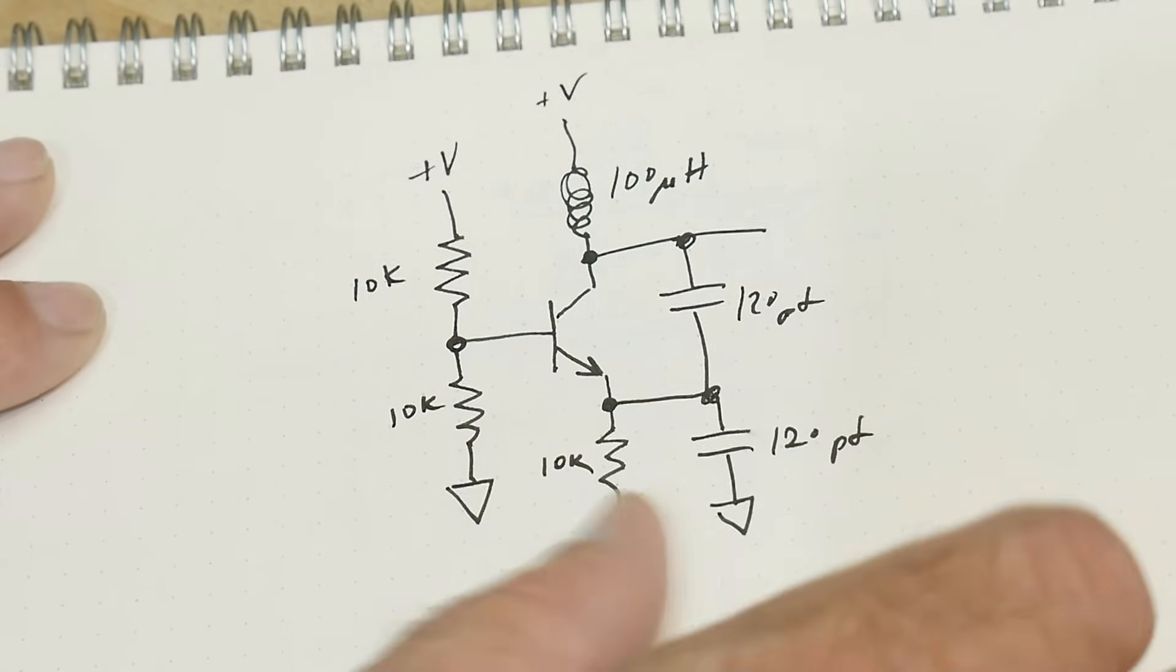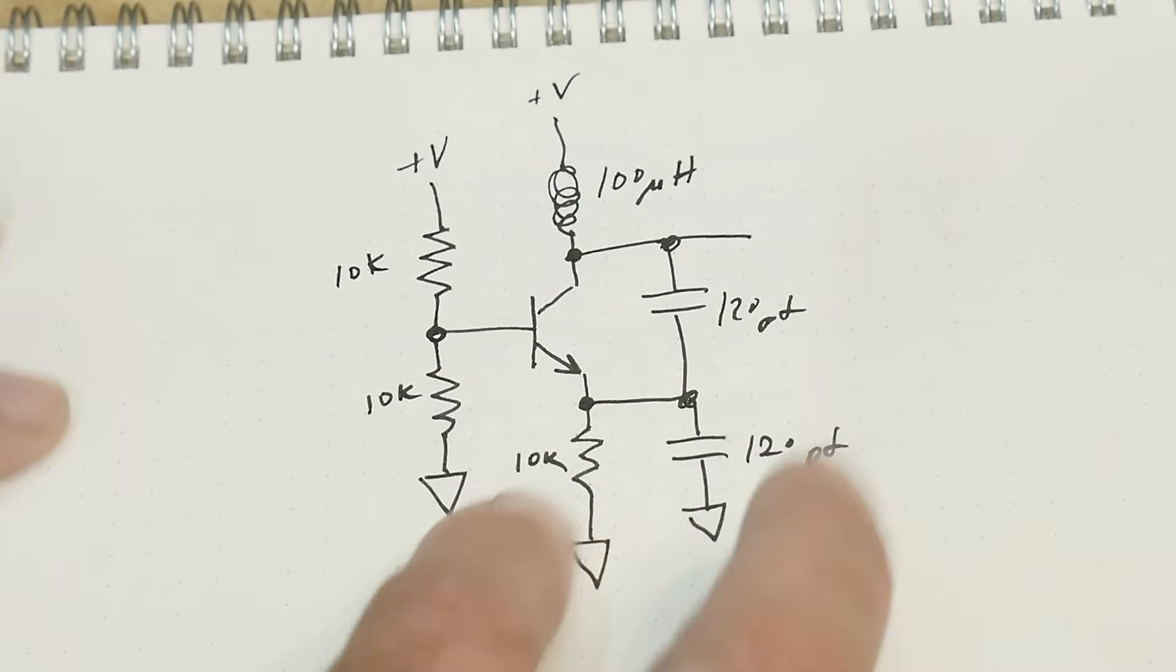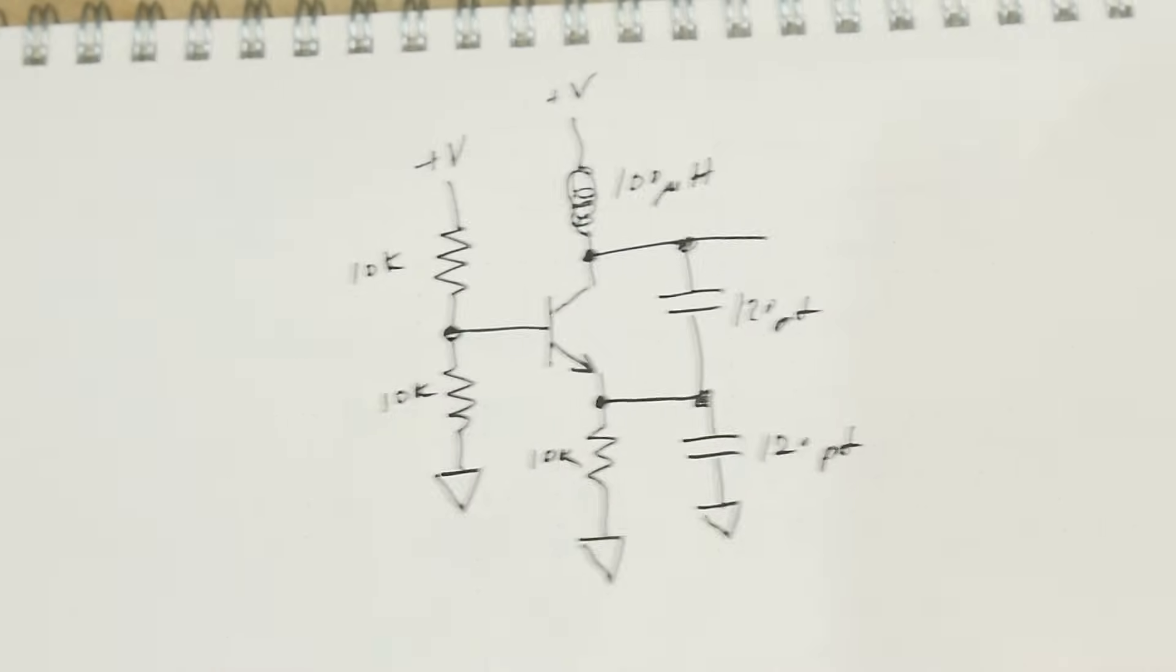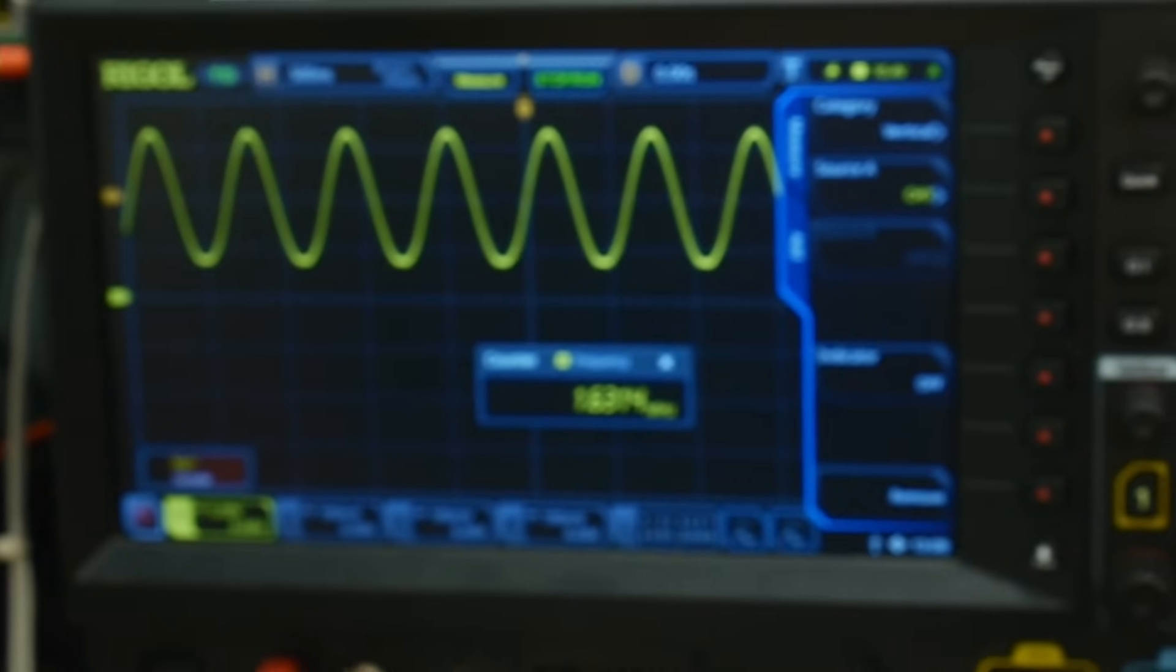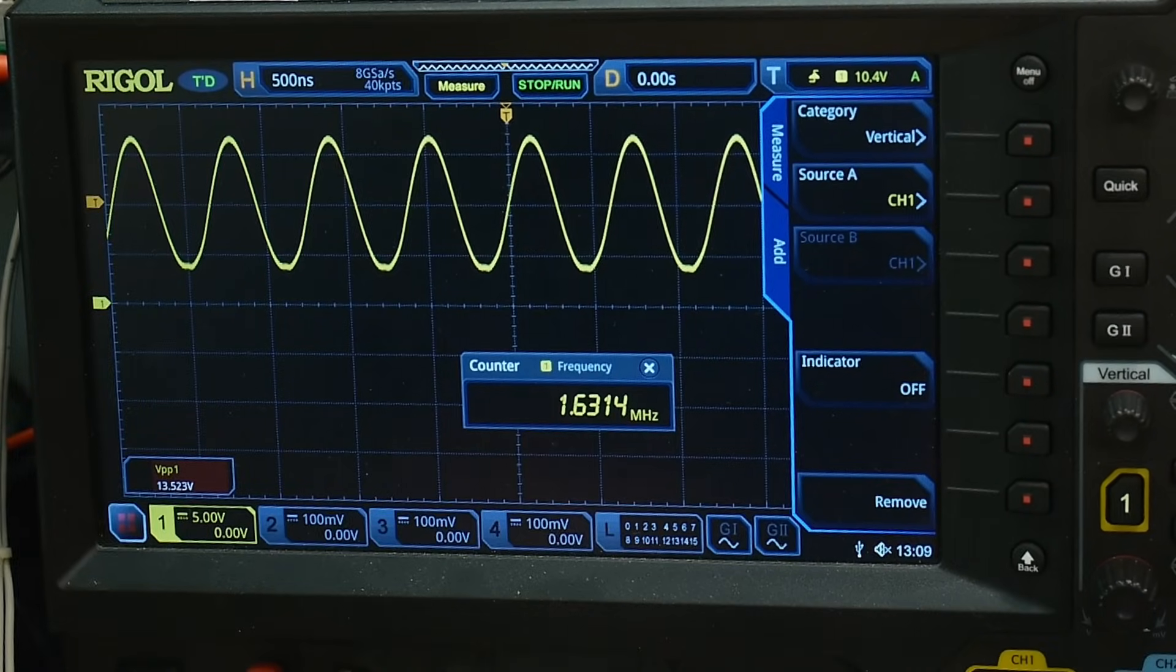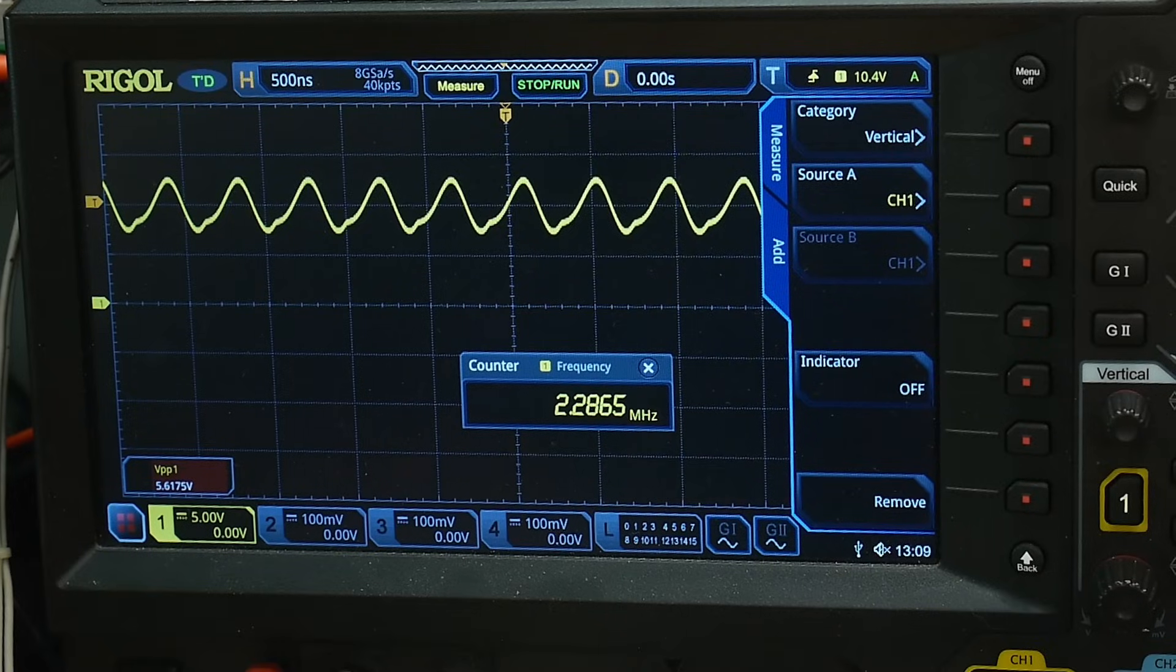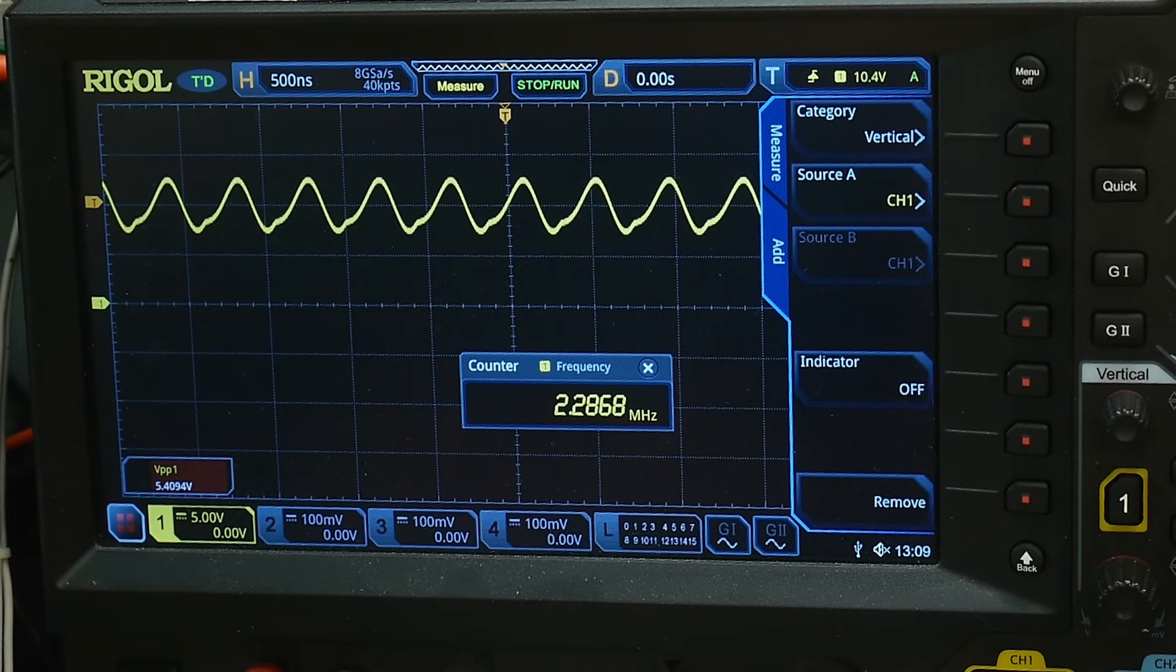Let's remove this capacitor here and I'll show you what that does to the oscillation. This is a capacitor that goes between the collector and the emitter. It certainly does add some feedback that increases the gain of the system, but it still does oscillate.